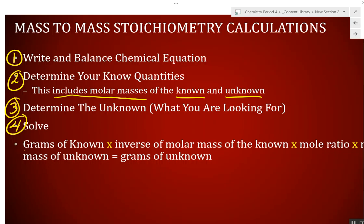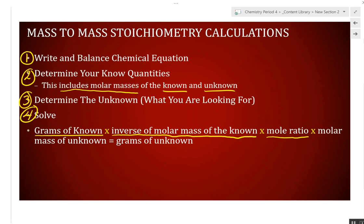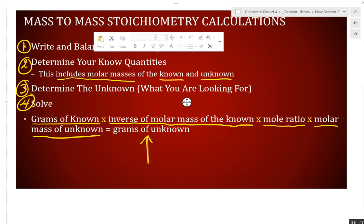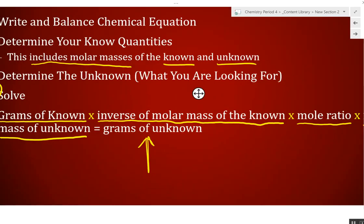And here is the equation. You start with grams of what you know. That's going to be the one with the number. Multiply by the inverse of the molar mass, or divide by the molar mass of the known. Multiply by the molar ratio. And then by the molar mass of what you're looking for. And you will end up at grams of unknown.